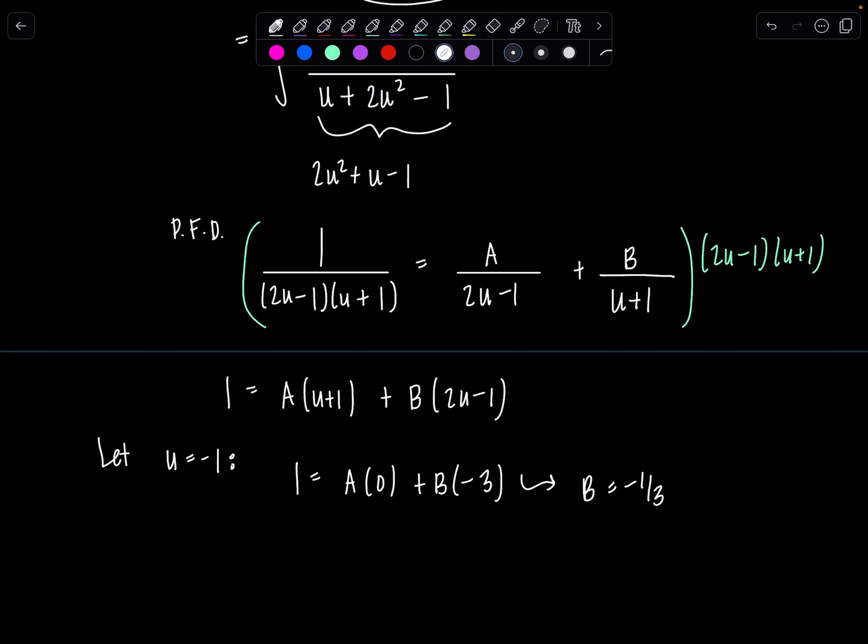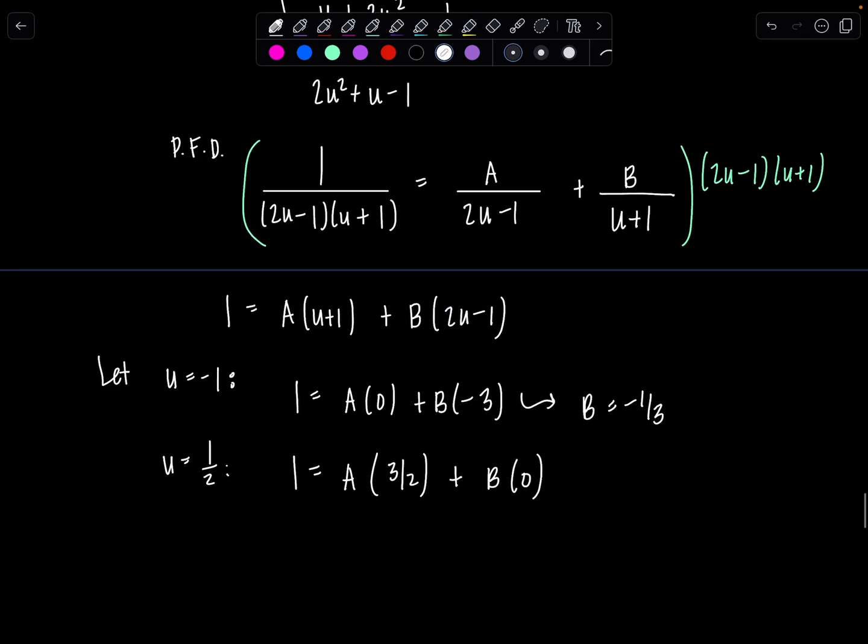Then 1 would equal a times 0 plus b times negative 3. So that means b is negative 1 third. And then similarly, if I pick u to be 1 half, that'll make this whole factor 0. So let me let u equal positive 1 half. Then 1 equals a times 1 half plus 1. That's 3 halves plus b times 0. So 3 halves a equals 1. That means a is 2 thirds.